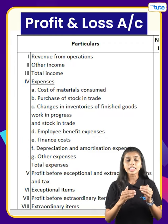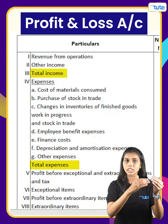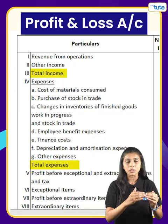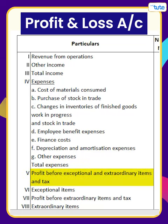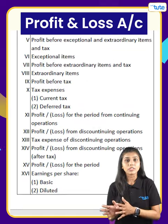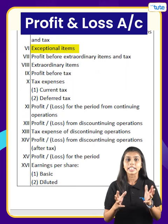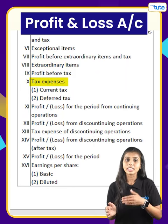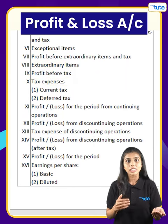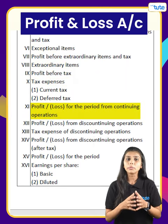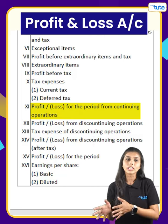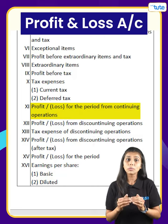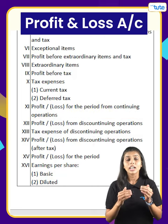Now, on deducting total expenses from total income, we get profit before exceptional items, extraordinary items and tax. Then give effect for exceptional and extraordinary items if any, then tax expenses, and we get profit or loss after tax. This will be from continuing operations.